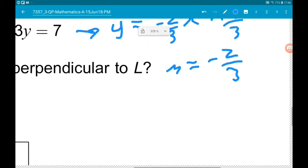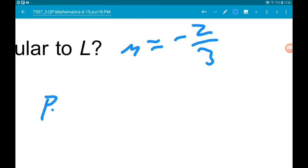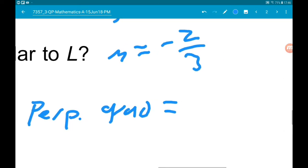So the perpendicular gradient to that is the negative reciprocal, which here is going to be positive 3 halves.